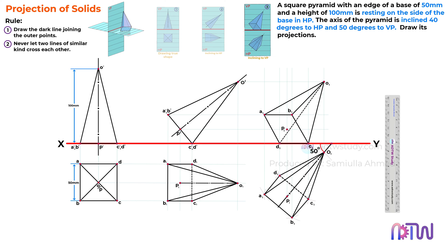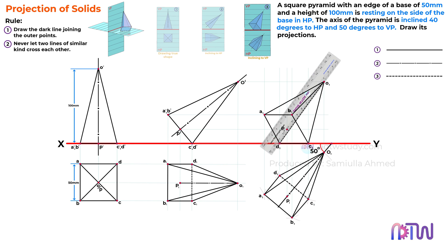Towards the end, we draw the axis of the pyramid. The axis line is crucial because it goes through the center of the pyramid. When different types of lines overlap, we follow a priority rule: dark line comes first, then the axis line, and last is the dotted line. So if a dark line and axis line overlap, we draw the dark line; if the axis line overlaps the dotted line, we prioritize the axis line. In our current scenario there is no overlapping, so we draw the axis line directly, passing through points P1 and O1. Therefore, we have the final required front and top view of the pyramid.